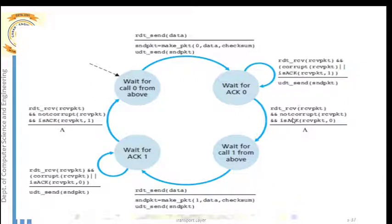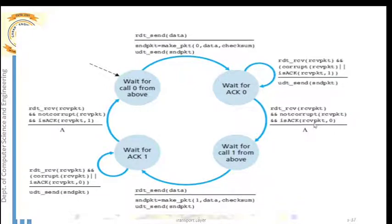The positive condition is: if the received acknowledgement is not corrupted, and the acknowledgement has sequence number zero (the expected one), then all conditions are satisfied. The sender does not need to retransmit and simply moves to the new state: waiting for the second packet to arrive from the application layer.